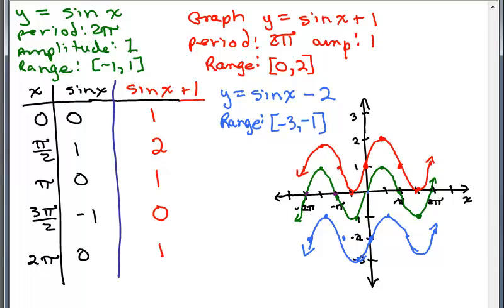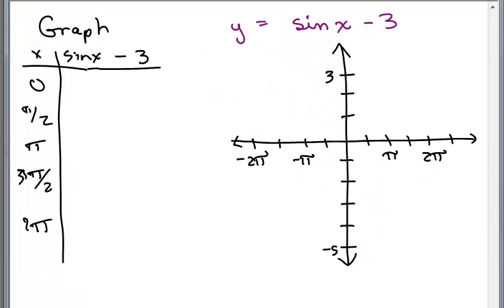That will go in between negative 3 and negative 1. The period and amplitude, the period is still 2π, the amplitude is still 1. Now, you might not always already have the sine function there. So how about if we just started out making a chart? How would we figure out what it's going to look like?